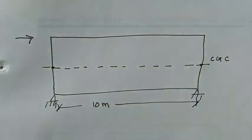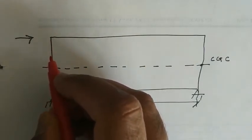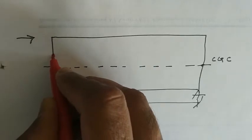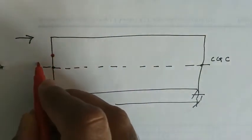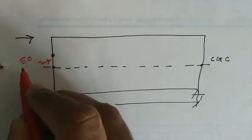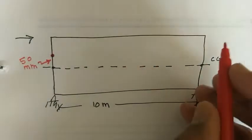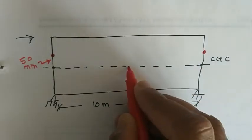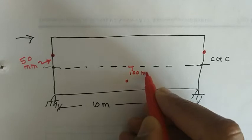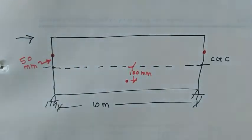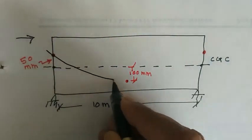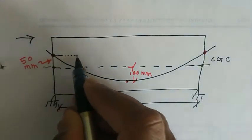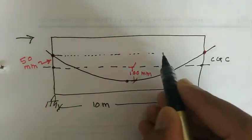Let us sketch the cable profile. As clearly mentioned in the question, the eccentricity of the wire is 50 mm above the centroid of the concrete at the end — symmetrically at both ends. At the center, the eccentricity is 100 mm below the centroid of the concrete. This is your cable profile.